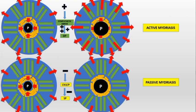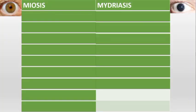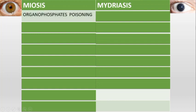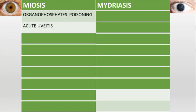Now let's see conditions causing miosis — small pupils. Organophosphate poisoning: organophosphates increase acetylcholine; increased acetylcholine increases parasympathetic activity, causing miosis. Acute uveitis: there is inflammation causing ciliary muscle spasm. The ciliary muscles are present inside the eye, and when they undergo spasm, there is miosis.